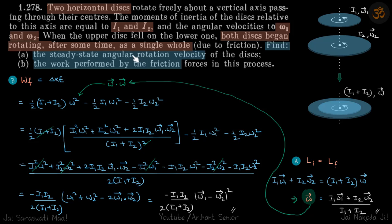That is the first part. Second, we need to find the work performed by the friction. The surface between the disks is rough, which is why they will start to rotate with a common angular velocity after some time. So we need to find that common angular velocity and the work performed by friction.